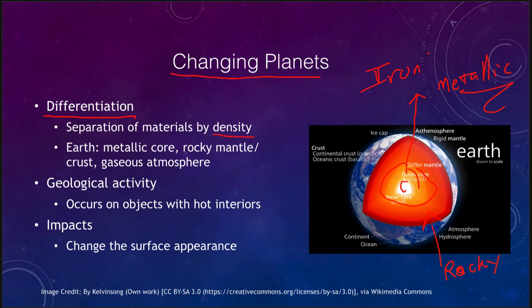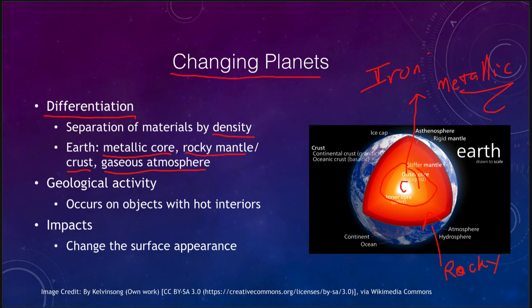What differentiation means is that the Earth was at one point entirely molten. That meant the denser materials were able to sink down to the core, and the less dense materials rose to the surface. So it gave us an Earth with a metallic core of the densest materials at the center, a rocky mantle and crust with higher density rocks in the mantle and lower density rocks on the crust, and then the lowest density gaseous atmosphere. This happened very early in planetary formation — just as water and oil separate by density, with less dense material rising to the top.